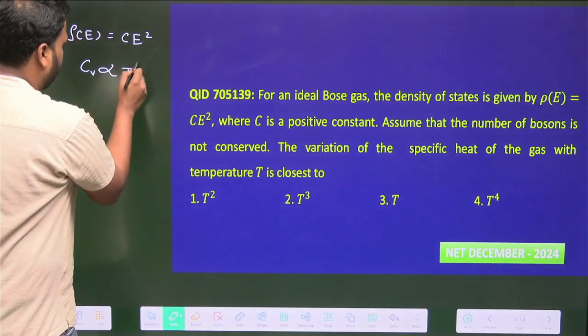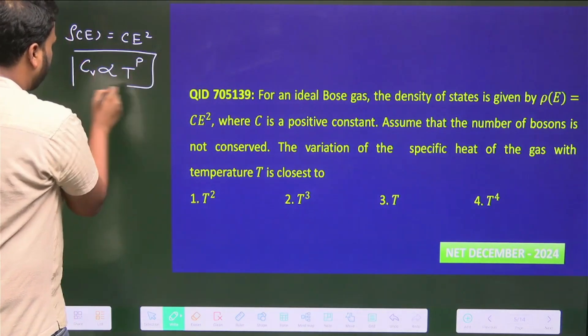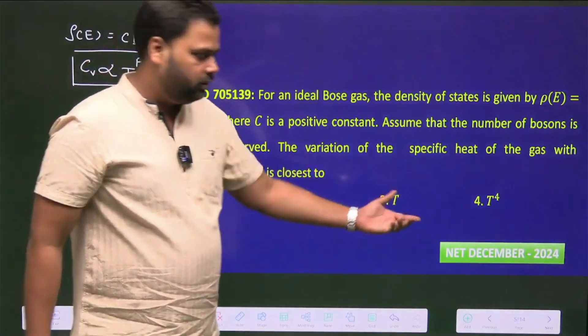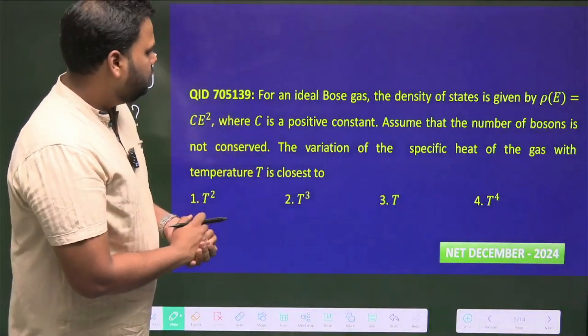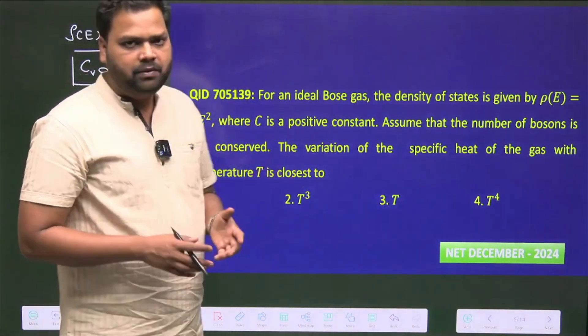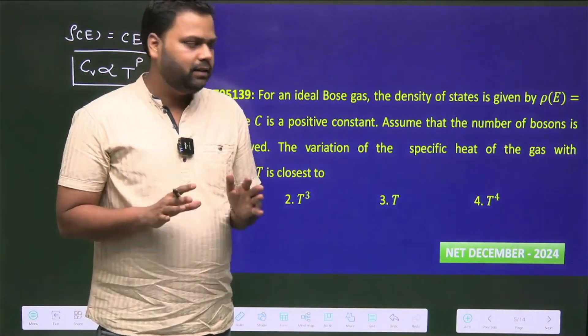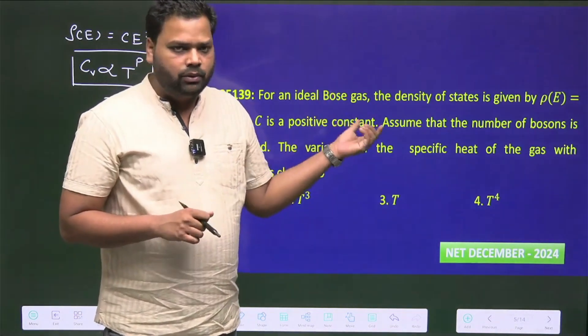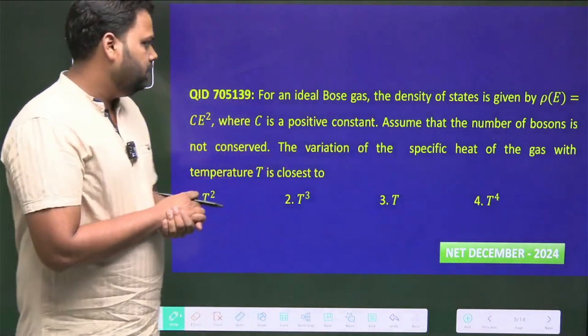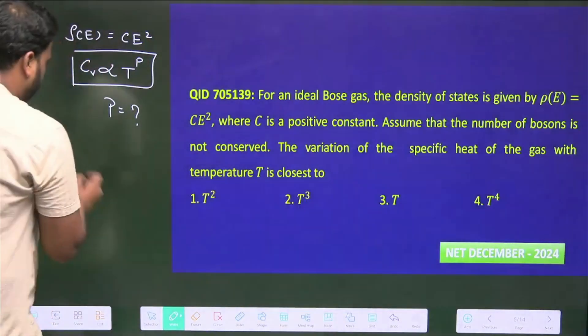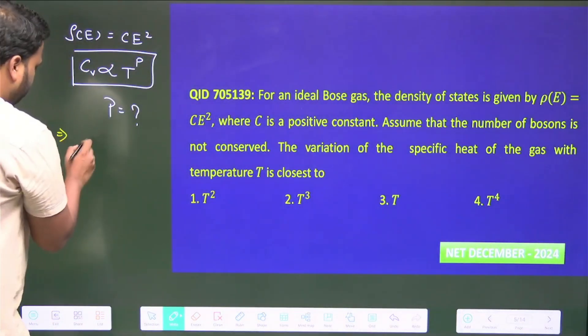Let's suppose this is T to the power P, so we have to find this P and once I get P we can choose our correct answer. This question is from condensed matter physics with a subtopic of the density of states we discussed in class, and there's a short trick to solve this question.